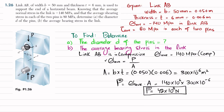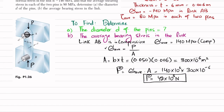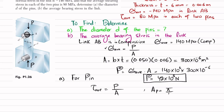Now that we have P, we move toward the first part for the pin. For the pin, we know that average shearing stress equals load divided by shearing area. The shearing area for the pin is pi over 4 times d squared.